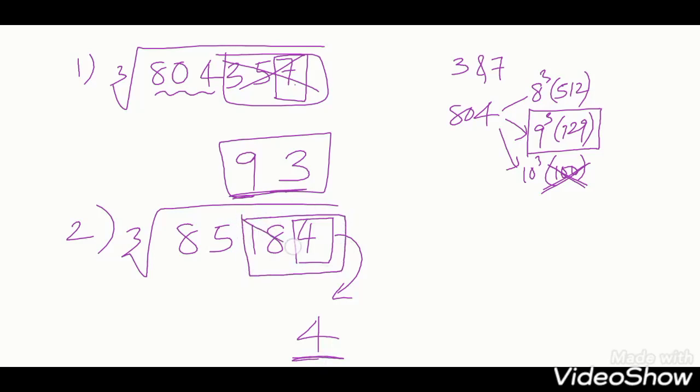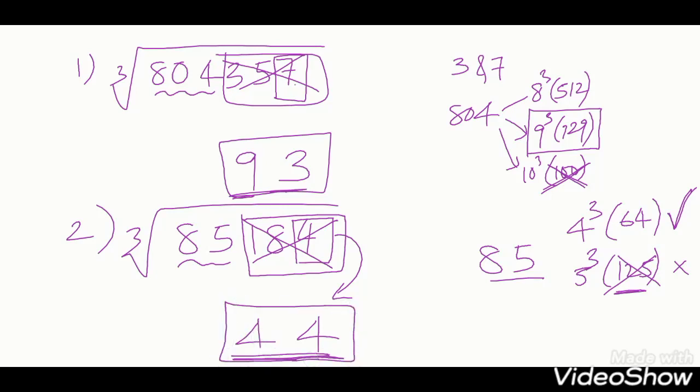We have to neglect 184. Remaining 85. 85 means 4 cube is 64. 5 cube is 125. 125 crossed. We should not take 5. We have to take 4 which is closer to 85. 4 will come in 10th place. 44 is the cube root of 85184. In this way, you can use these shortcuts to find cube root of any number within 10 seconds. Hope you understand these shortcuts.